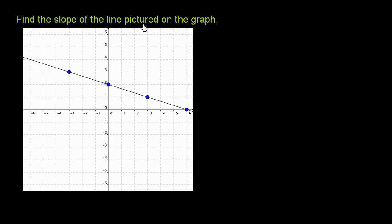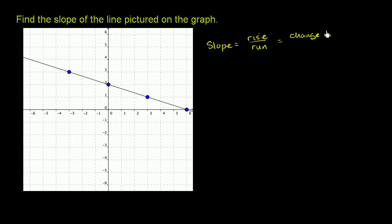Find the slope of the line pictured on the graph. The slope of a line is defined to be rise over run, or you could also view it as change in y over change in x. Let me show you what that means — change in x.